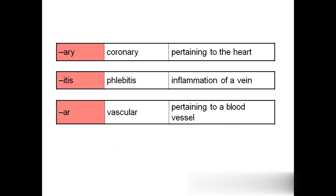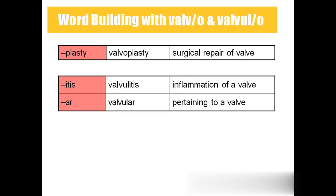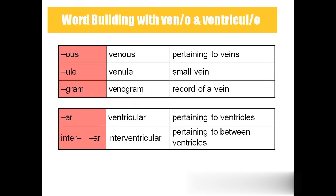Coronary — pertaining to the heart. Phlebitis — inflammation of the vein. Vascular — pertaining to the blood vessel. Valvoplasty — surgical repair of the valve. Valvulitis — inflammation of the valve. Valvular — pertaining to the valve. Venous — pertaining to the veins. Venule — smaller vein. Venogram — record of the vein. Ventricular — pertaining to the ventricles. Interventricular — pertaining to in between the ventricles.